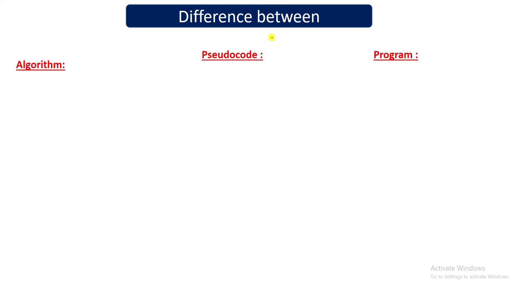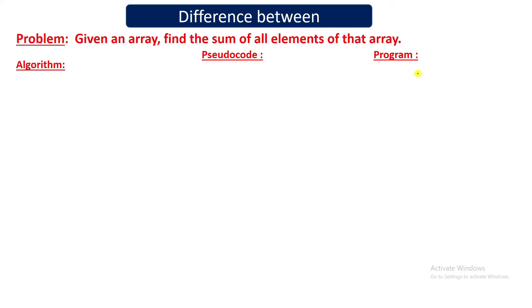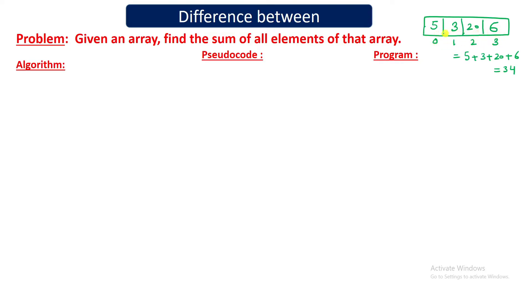Now let's understand what is the difference between algorithm, pseudocode, and the program with the help of an example. For example, you are given a problem: you have an array and you have to find the sum of all elements of that array. Let's say the array contains 4 elements — 5, 3, 20, and 6 — so the sum is 34. You take this array as input and print 34 as output. The array can contain any number of elements and the size will be taken from the user.